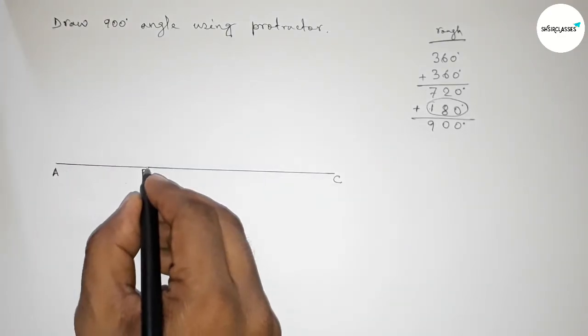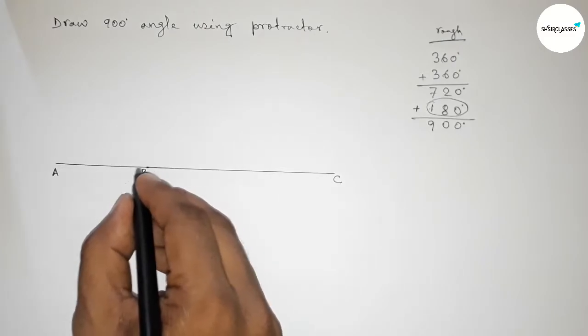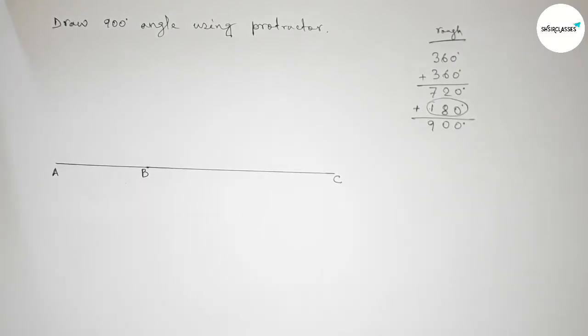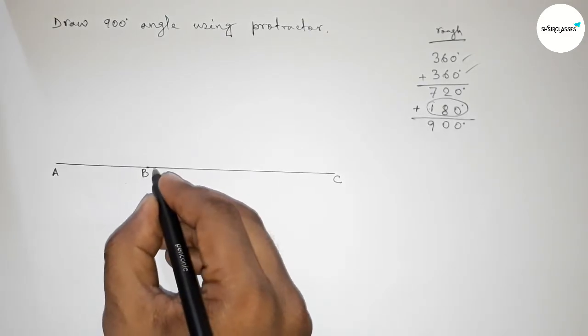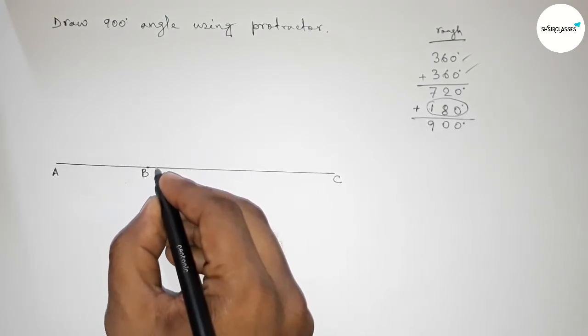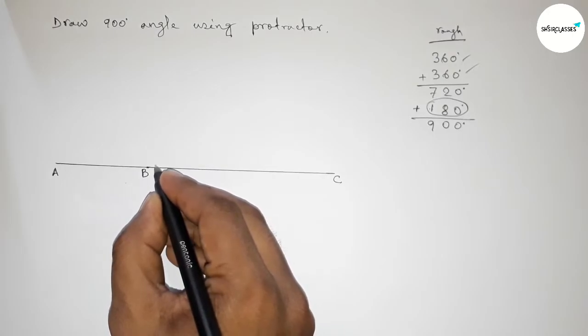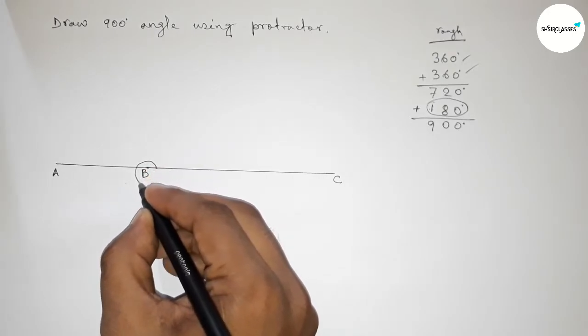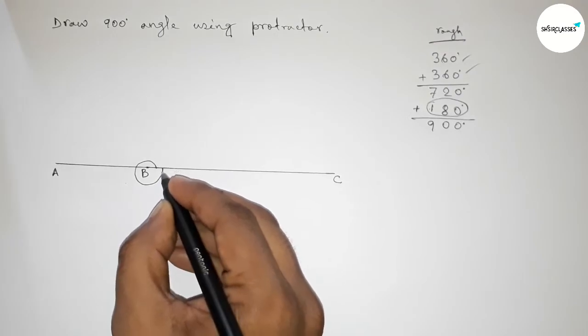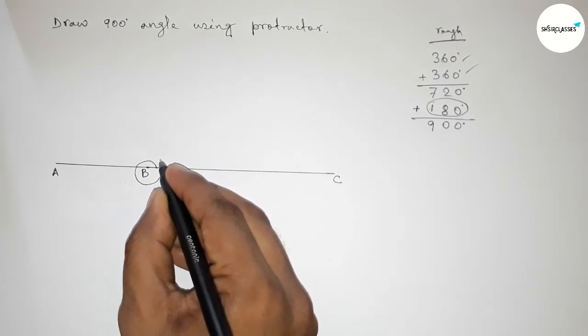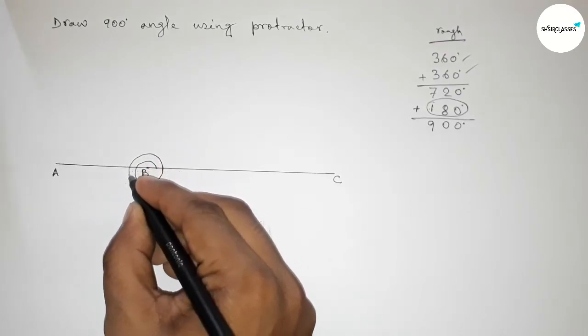Now first drawing 360 degree angle two times. From starting here, taking one round from this to this, so this is 360 degrees. Taking another 360 degree angle, drawing another round, so this is two times 360 degrees.